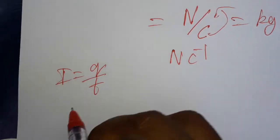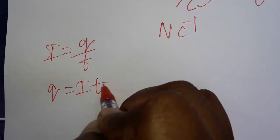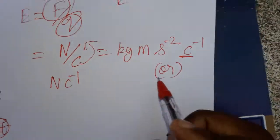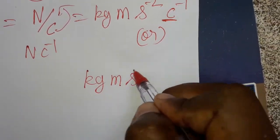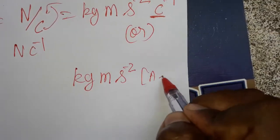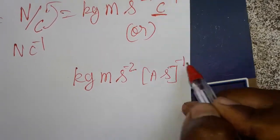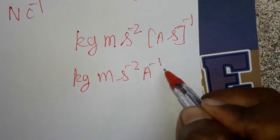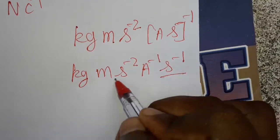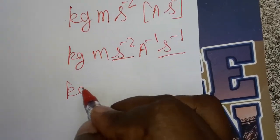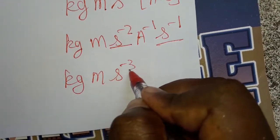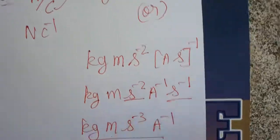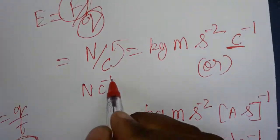We can also take Coulombs as Ampere into second, because current is equal to charge, so 1 Ampere into 1 second. So kg·meter·second⁻² with Ampere·second taken as minus one gives kg·meter·second⁻²·Ampere⁻¹·second⁻¹, which simplifies to kg·meter·second⁻³·Ampere⁻¹.